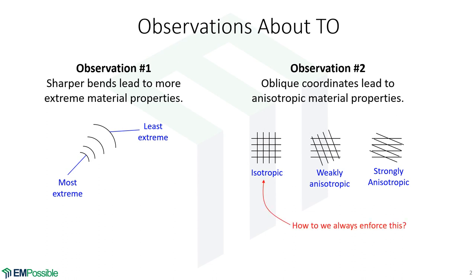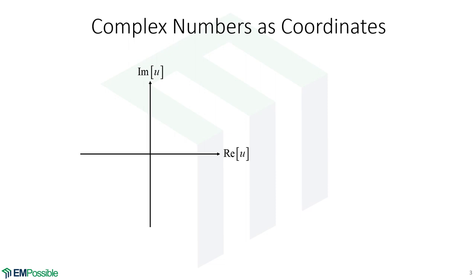So the question is, how do we enforce this 90 degree crossing all the time? Well, we use complex numbers as our coordinates. So rather than have X and Y, why not have a complex U and we have a real axis and an imaginary axis.